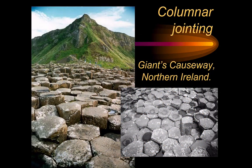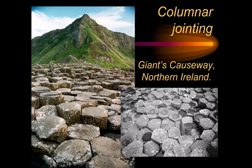One of the most distinctive features of igneous rocks — which can be found in both lava flows and igneous intrusions — is columnar jointing. Some of the most spectacular examples can be found at the Giant's Causeway on the north coast of Northern Ireland. These beautiful regular columns are formed when lava cools and contracts, cracking to create almost perfect hexagons.